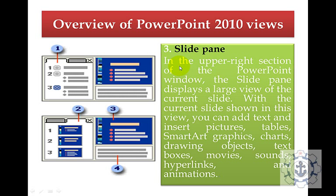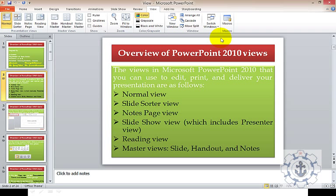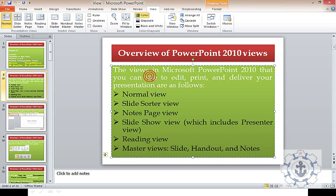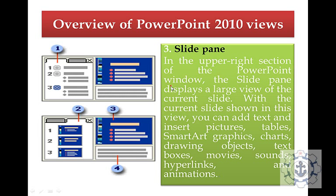The third working area is the slide pane, located in the upper right section of the PowerPoint window. The slide pane displays a large view of the current slide. With the current slide shown in this view, you can add text and insert pictures, tables, SmartArt, graphics, charts, drawing objects, text boxes, movies, sounds, hyperlinks, and animations — everything can be customized as you like.